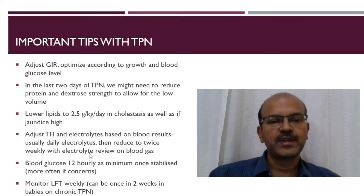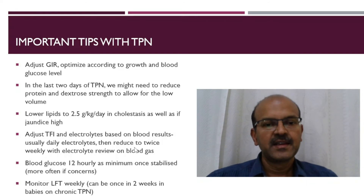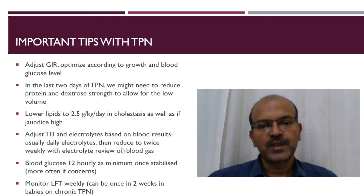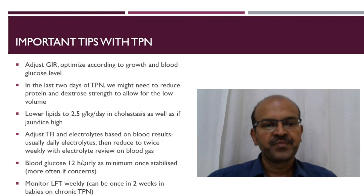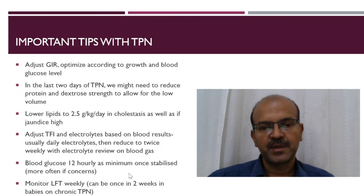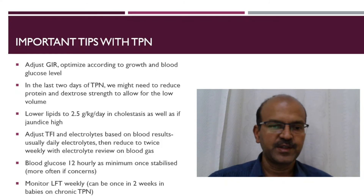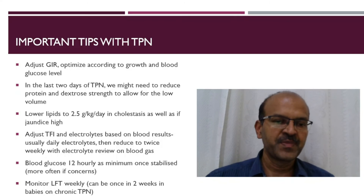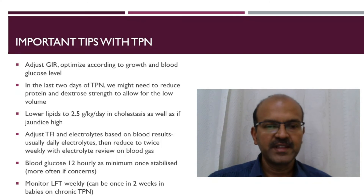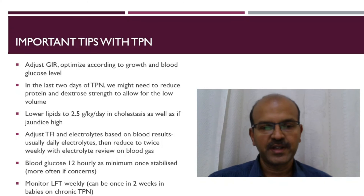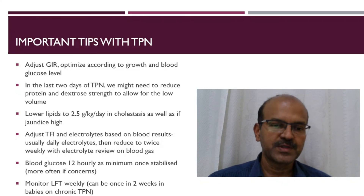Usually we do daily electrolytes in the initial phase, then reduce to twice weekly, reviewing electrolytes on the blood gas to avoid extra sampling. Blood glucose is monitored at a minimum of every 12 hours, and more frequently in the initial phase once stabilized. We try to avoid insulin as far as possible, but if insulin is needed, blood glucose must be monitored more closely.